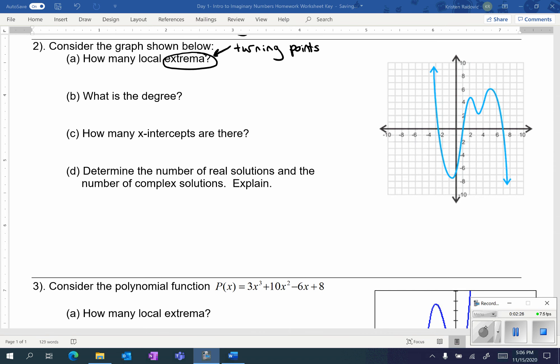In order to figure out the degree, what we're going to have to do is take the number of extrema and add one to it, because your extrema plus one is equal to the degree of five.